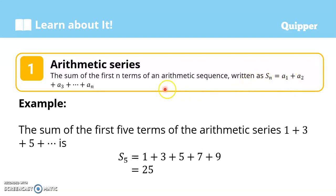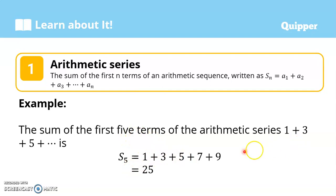Example: the sum of the first five terms of the arithmetic series 1 plus 3 plus 5 plus dot dot dot. We are talking about five terms, so that is denoted by S sub 5. That will be 1 plus 3 plus 5 plus 7 plus 9, which equals 25. So the sum of the first five terms of the arithmetic series is 25.